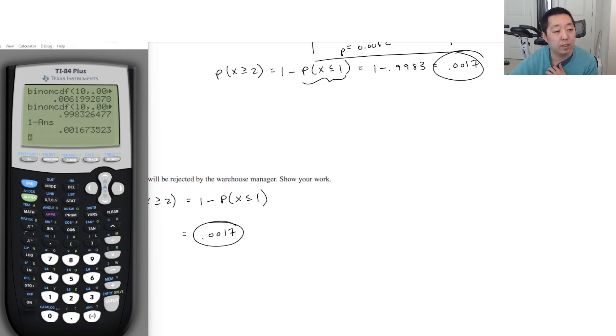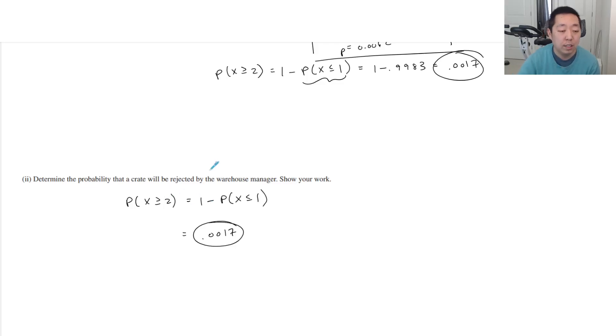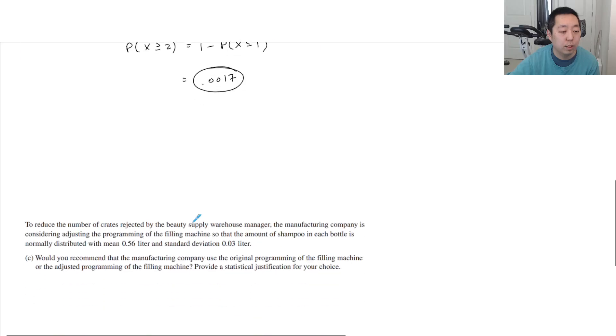If your binomial CDF allows you to put a range, you could put two to 10. Notice that I put less than or equal to one, because I want it to be one or zero underfilled bottles. CDF always includes the endpoint, so you can't use two here, you have to put one for it to work correctly. But if you have a more fancy calculator that gives you a lower bound and upper bound, you could just put two and 10 as your lower and upper bound, and that would work also.